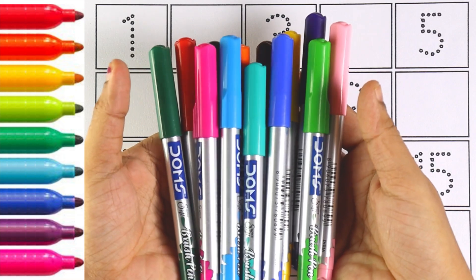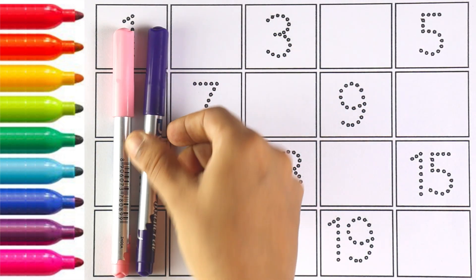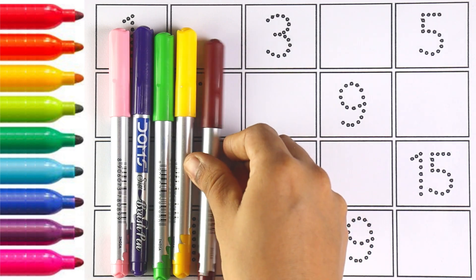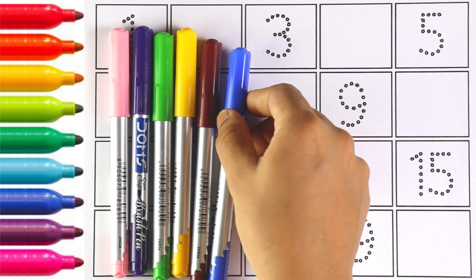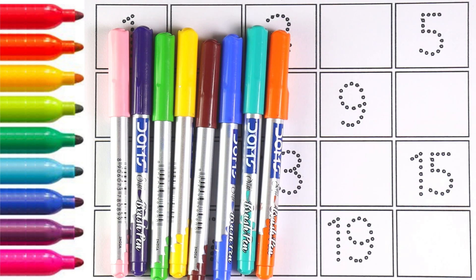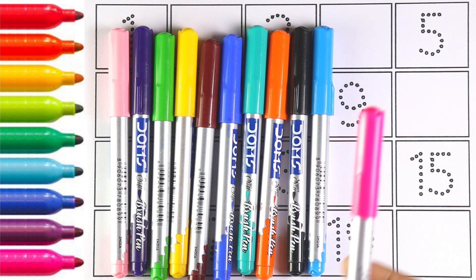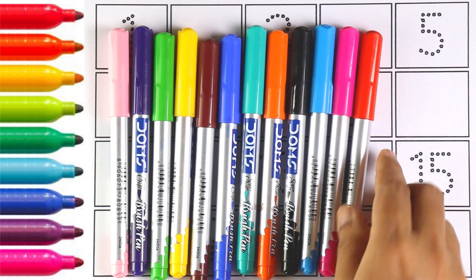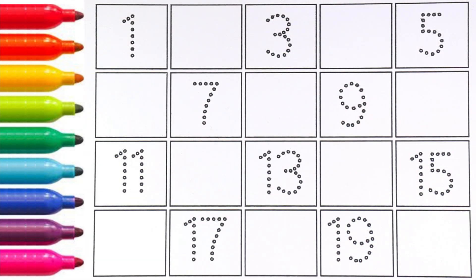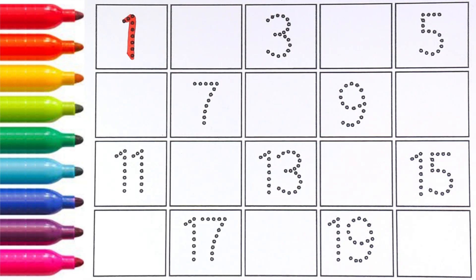Light pink color, purple color, light green color, yellow color, brown color, blue color, light blue color, orange color, black color, sky blue color, pink color, red color, and green color. Let's start writing numbers. Number one, number one.